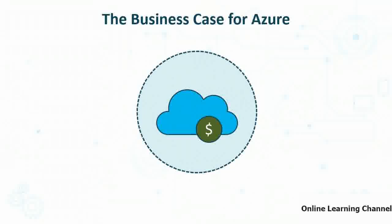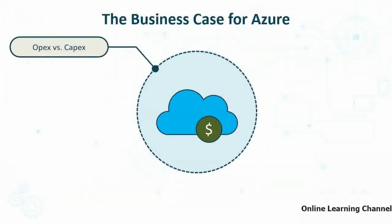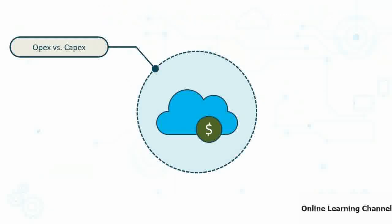The first thing to consider with the adoption of cloud computing is how it solves business problems. The first consideration is operating expenses versus capital expenditures. Operating expenses, or OPEX, apply in a cloud computing environment where you pay on a monthly basis for cloud services used. That's opposed to capital expenditures, or CAPEX, which apply on-premises, where you pay for hardware, software, licenses, and configuration.